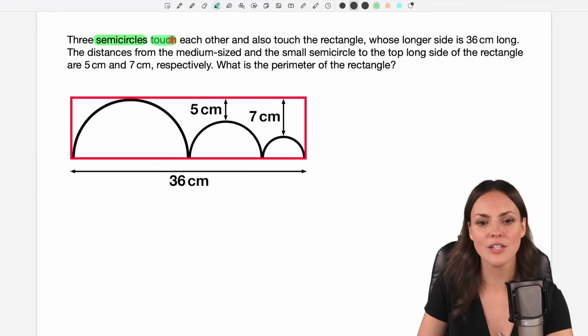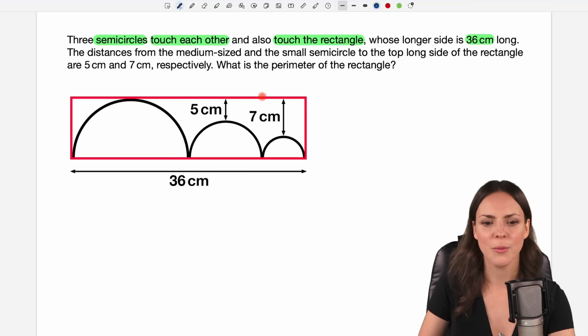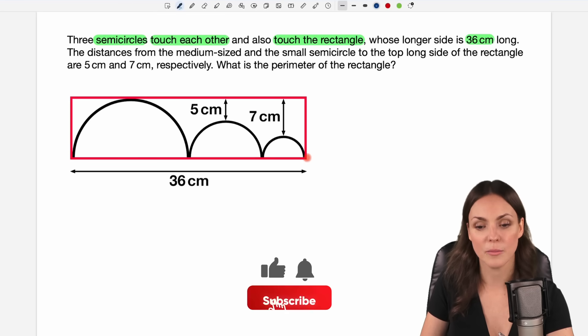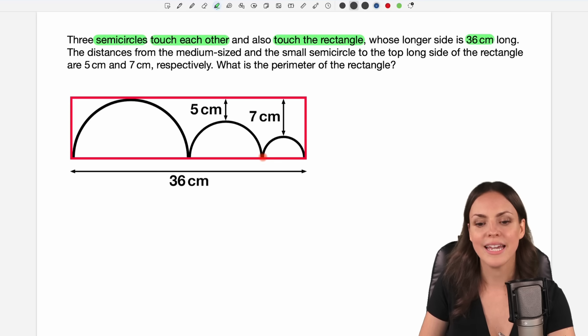Three semicircles touch each other and also touch the rectangle whose longer side is 36 centimeters long. We can see our rectangle here. The length of this side is given by 36 centimeters and inside we have these three semicircles, a big one, a medium-sized one and a small one, and they touch each other and they touch the sides of the rectangle as well.